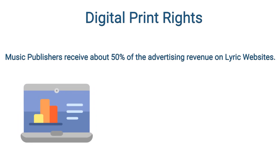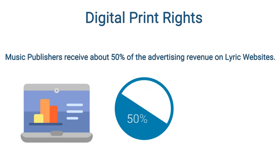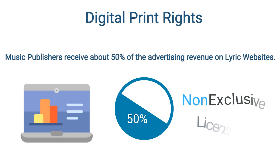Some companies offer downloadable sheet music for similar prices as physical sheet music. However, there are a few key differences in the types of agreements between these companies and publishers. Publishers typically request and receive half of the income from these sites, which is a marked jump from the 20% they receive for physically printed music. In addition, print licenses for digital printed music are almost always non-exclusive, unlike traditional print deals. This means a publisher can license the same rights to multiple websites at the same time.